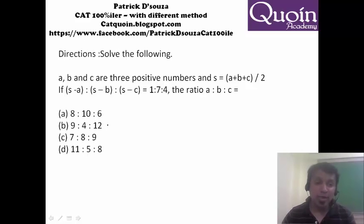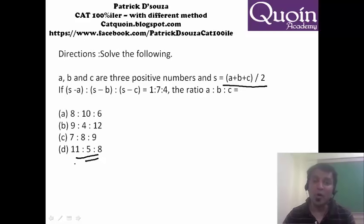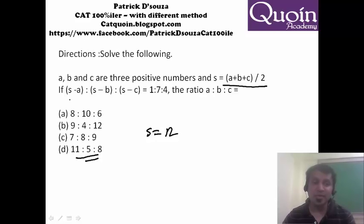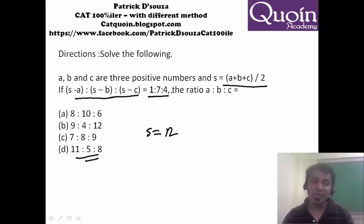Say I substitute option D. I know A plus B plus C divided by 2, so if I do that I get S equal to 12. Now substitute here: S minus A, S minus B, S minus C. You will get the ratio as 1 is to 7 is to 4. It satisfies — a simple way of solving.